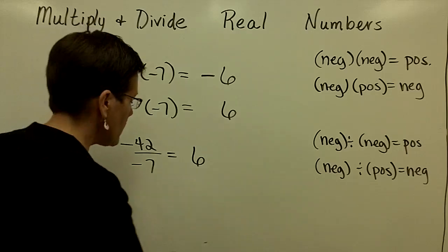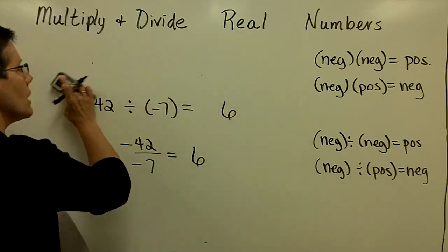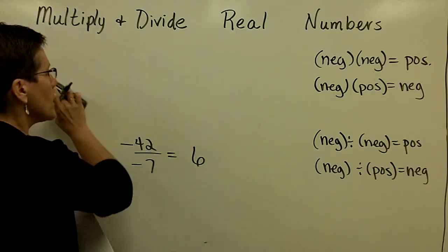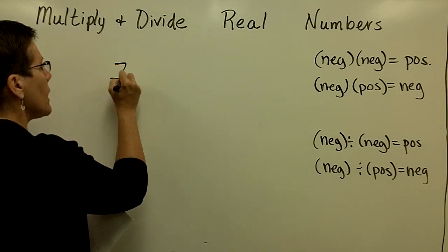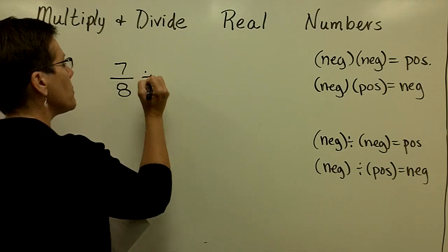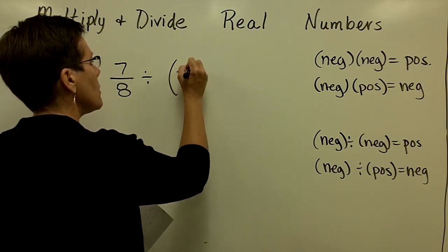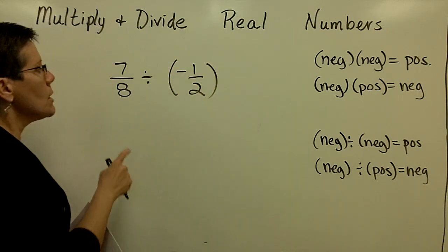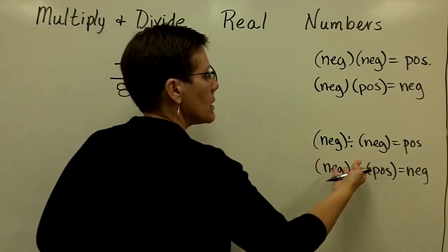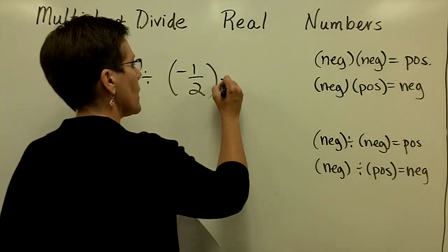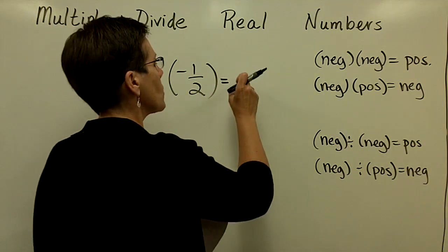If I did a division problem with fractions, again, signs follow the same rules. And so let's take 7 eighths and divide it by a negative 1 half. So a positive number divided by a negative number gives us a negative answer. So I know the answer to this problem is going to be negative.